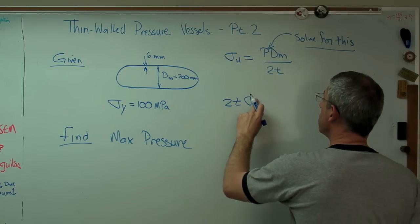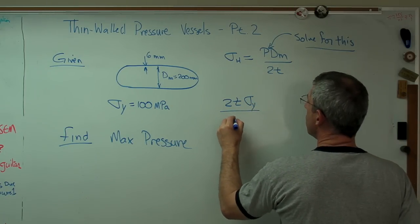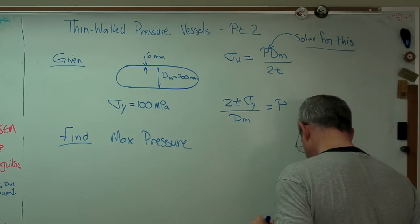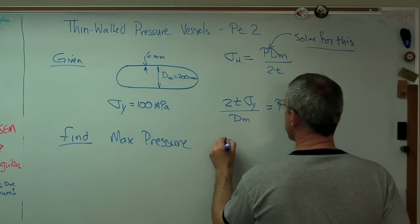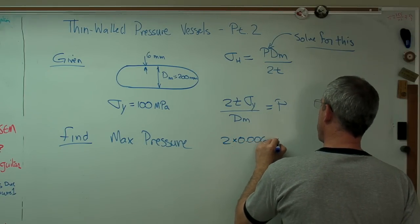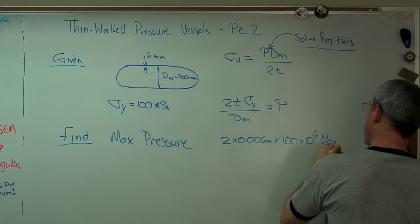Over dm equals p. Did I get that right? I did. Okay. So that's 2 times 0.006 meters times 100 times 10 to the sixth newton per meter squared, all over.